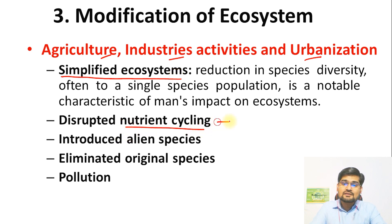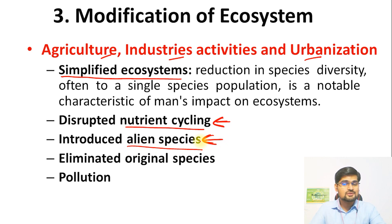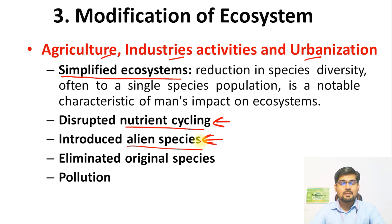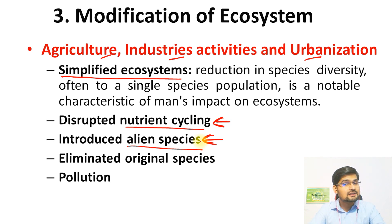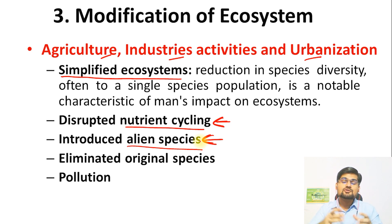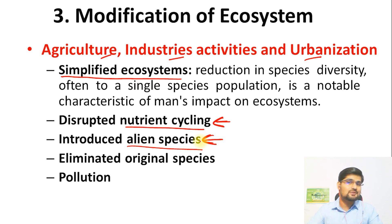Then there is disrupted nutrient cycling — we are definitely changing the nutrient cycle because of our activities. Then there is the introduction of alien species. For example, in India we see eucalyptus plantations. Eucalyptus does not belong to India — we have taken it from Australia and planted it across our highways and many places. People later realized it absorbs a lot of moisture and water, having a detrimental effect on the land's productivity. We are introducing many times alien and misfit species into ecosystems.